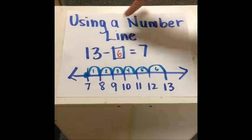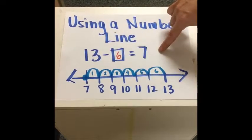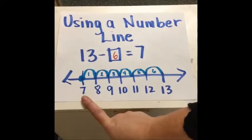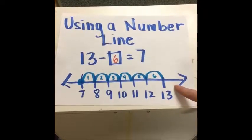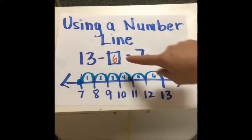For 13 minus something equals 7, they could start at 7 and jump until they get to 13, which would be 6 jumps, so they would know the answer is 6.